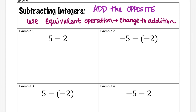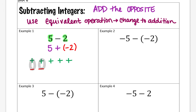Let me show you what I mean with example one. We have positive five and we're subtracting positive two — hopefully you know that five minus two is three. I'm going to start with five positives. I'm going to keep my positive five, but change my subtraction to adding, and add the opposite of positive two, which is negative two. Adding a negative is equivalent to subtracting a positive. I add those underneath and look for zero pairs — I have two zero pairs, and three positives left over, so my answer is positive three.